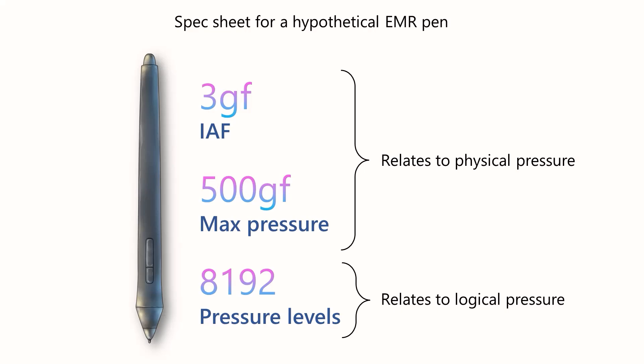The IAF and the maximum pressure relate to physical pressure - how much force is being exerted at the tip of the pen. The number of pressure levels, on the other hand, relates to logical pressure and has some correspondence to physical pressure.